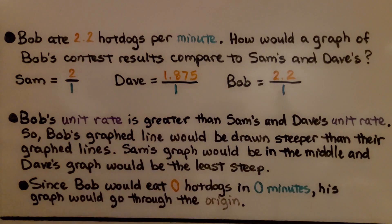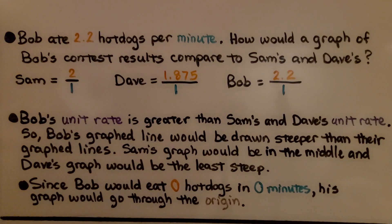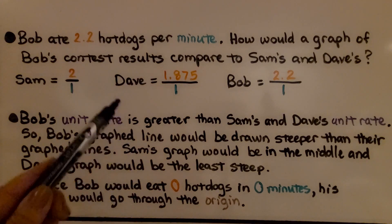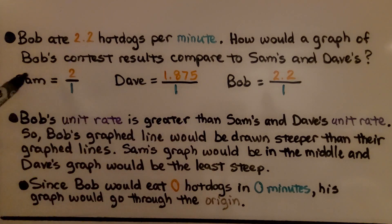Bob's unit rate is greater than both Sam's and Dave's, so Bob's graphed line would be drawn steeper than their graphed lines. Sam's graph would be in the middle, and Dave's graph would be the least steep. Since Bob would eat 0 hot dogs in 0 minutes, his graph would go through the origin (0, 0). In fact, they all ate 0 hot dogs in 0 minutes, so all of their graphs would go through the origin.